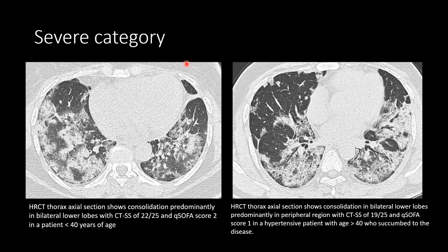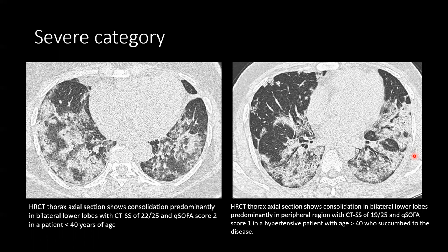These are 2 different cases from the severe category of COVID-19 based on CT severity score. The first CT thorax axial section shows consolidation predominantly in bilateral lower lobes, with a CT severity score of 22 out of 25 and a QSOFA score of 2, in a patient less than 40 years of age. The second HRCT thorax shows consolidation in bilateral lower lobes predominantly in the peripheral region, with a CT severity score of 19 out of 25. This patient was hypertensive, and mortality was observed.